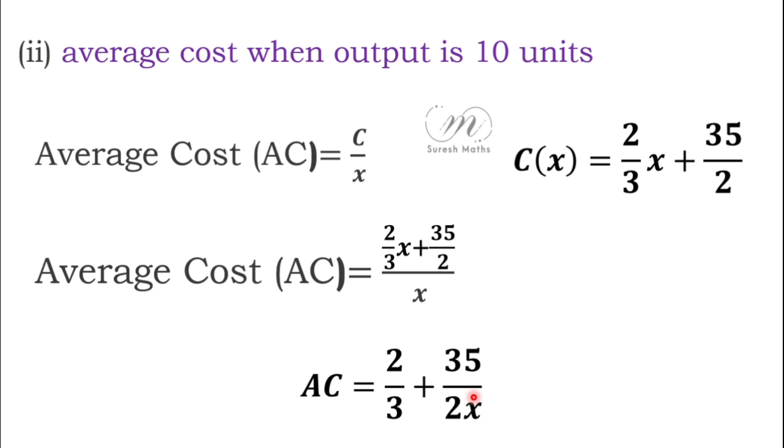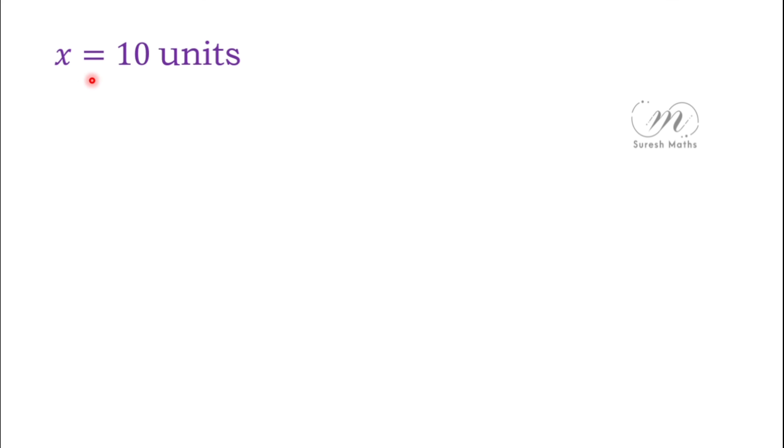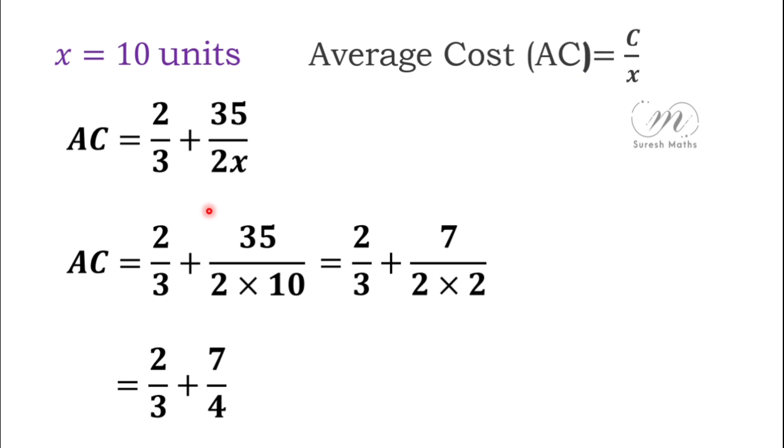x equals 10 units. So 2/3 plus 35 by 2 × 10. The 35 and 10 cancel to 7 and 2. So 2/3 plus 7/4. LCM is 12. 8 plus 21 over 12 equals 29/12. This is the required average cost.